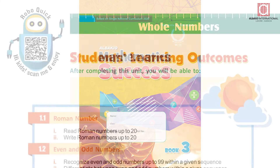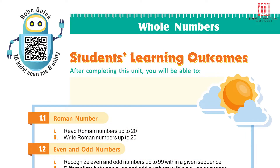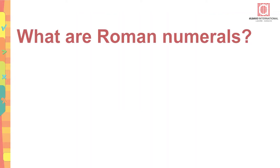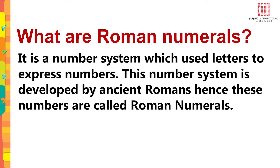Mathematics Success Book 3. The first SLO we are going to work on is Roman numbers: read Roman numbers up to 20 and write Roman numbers up to 20. Let me tell you what Roman numerals are. It is a number system which uses letters to express numbers. This number system was developed by ancient Romans, hence these numbers are called Roman numerals.